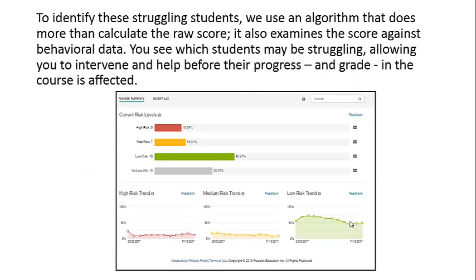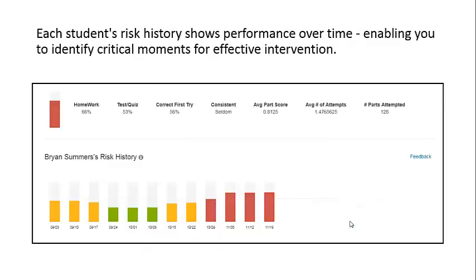To identify these struggling students, we use an algorithm that does more than calculate the raw score. It also examines the score against behavioral data. You see which students may be struggling, allowing you to intervene and help before their progress in the course is affected.